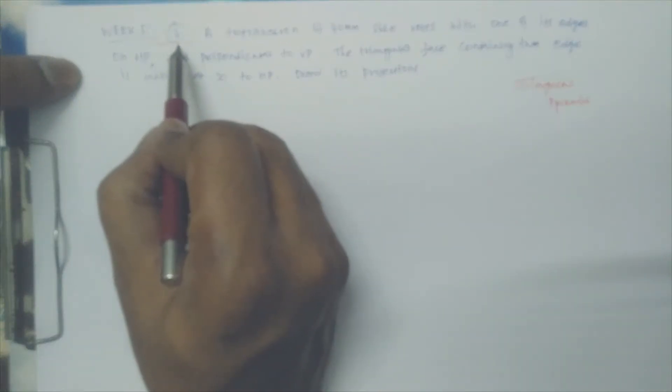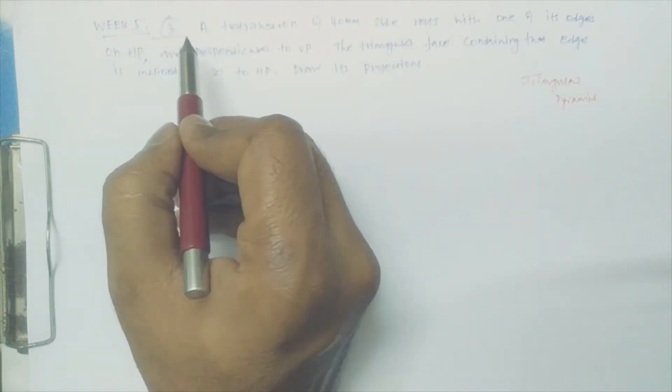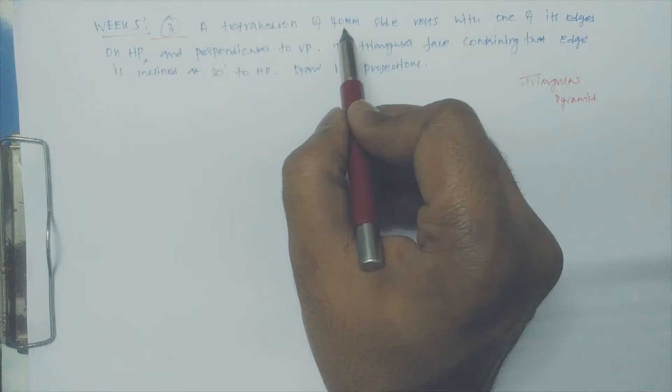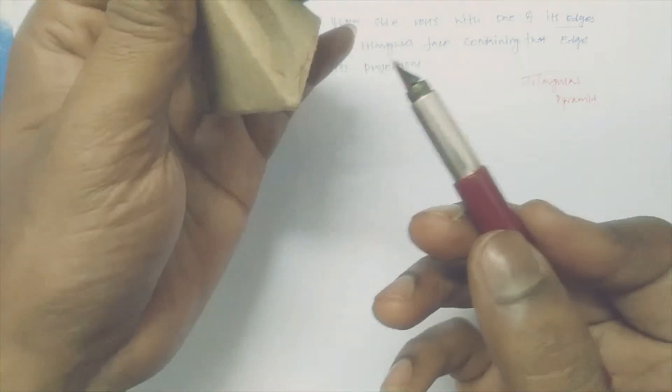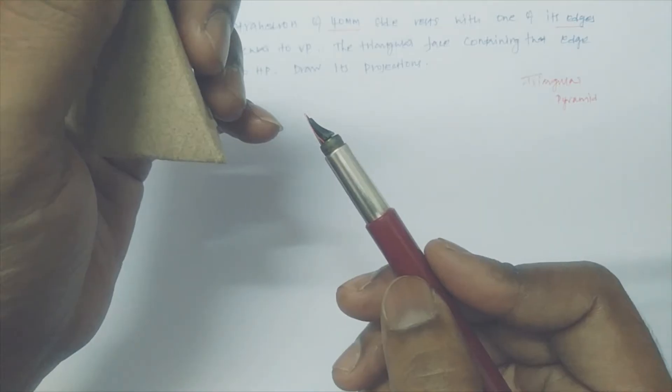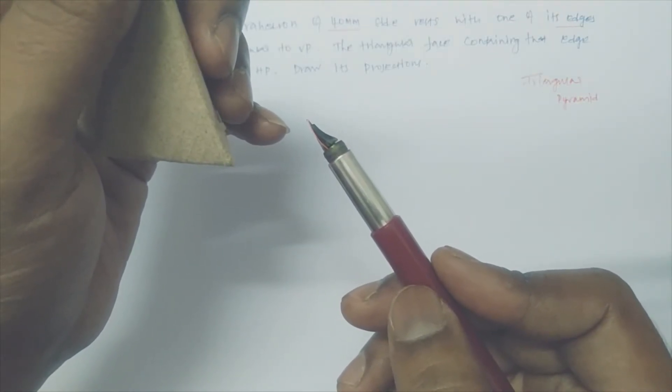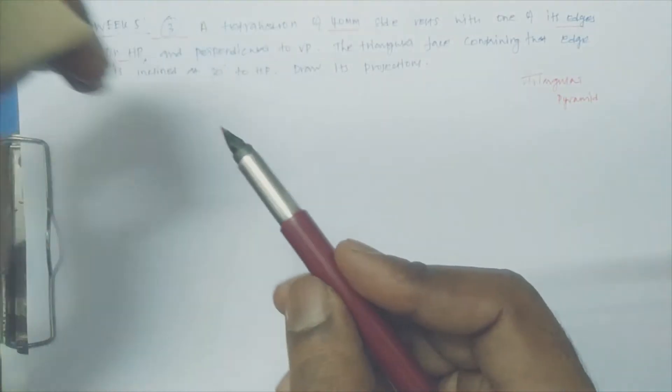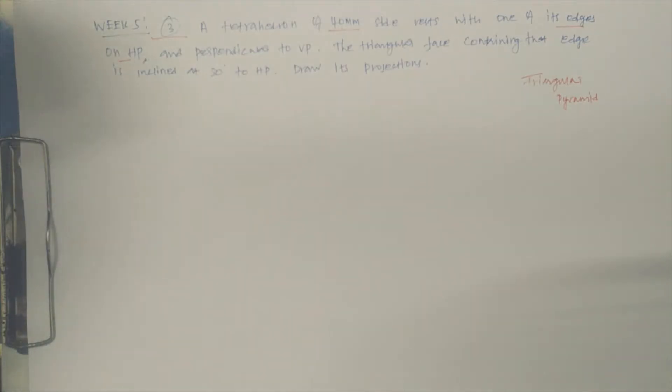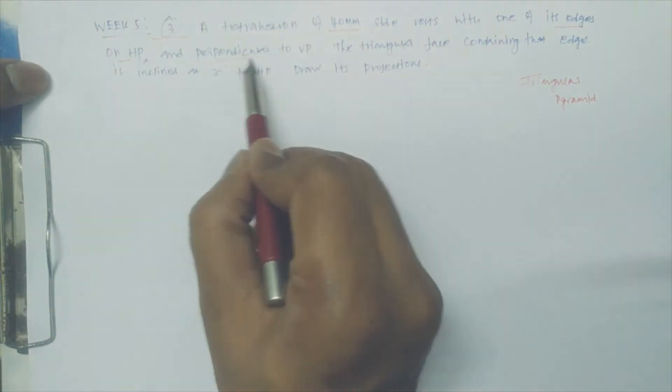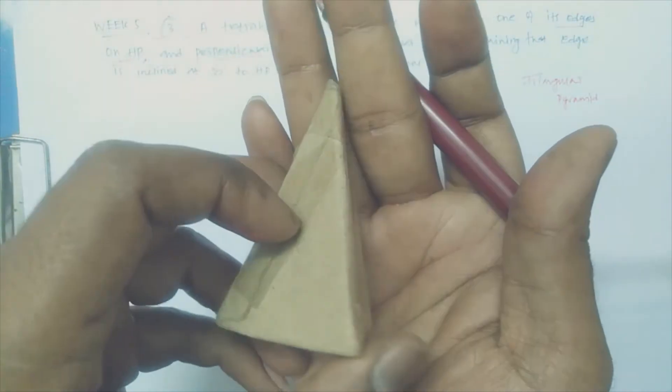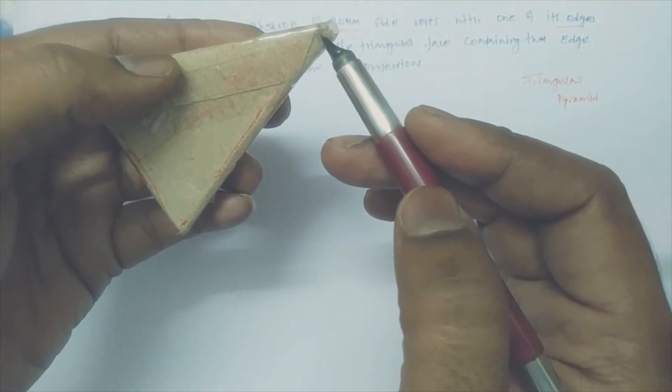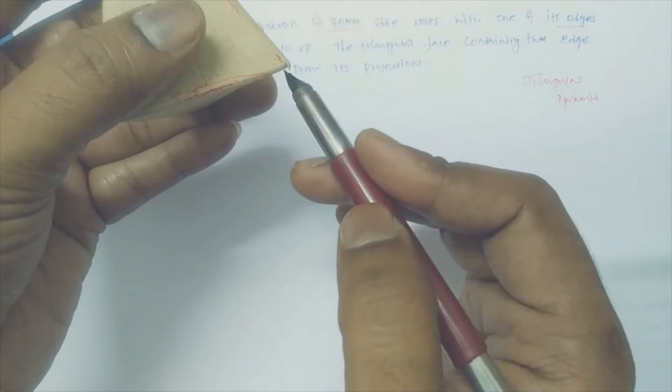Let us go to Week 3, Week 5, Problem Number 3. A tetrahedron of 40mm sides rests with one of its edges on HP and perpendicular to VP. It is kept like this - perpendicular to VP. The axis is perpendicular to VP. This one is the vertex, also you can call it apex. These are all the edges.